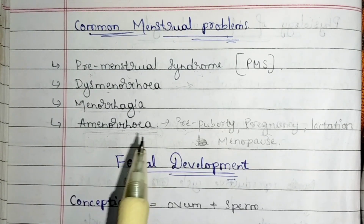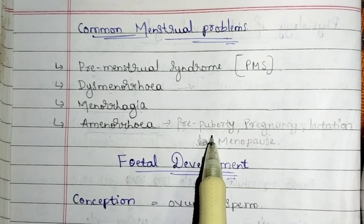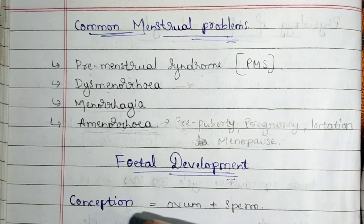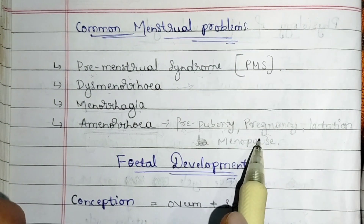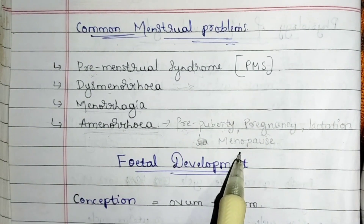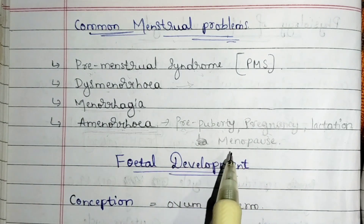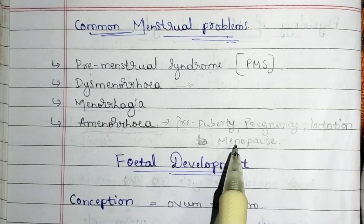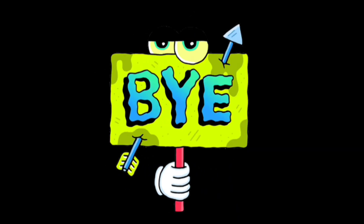Amenorrhea is the absence of menstrual cycles. It is a problem, but it is not considered a problem in certain conditions: before puberty (before menarche, before age 8), during pregnancy, during lactation, and after menopause — in all these conditions, the absence of menstruation is normal. These are the common menstrual problems. Questions will be provided after completing the whole chapter. That's it for today — let's meet in the next video, until then stay tuned.